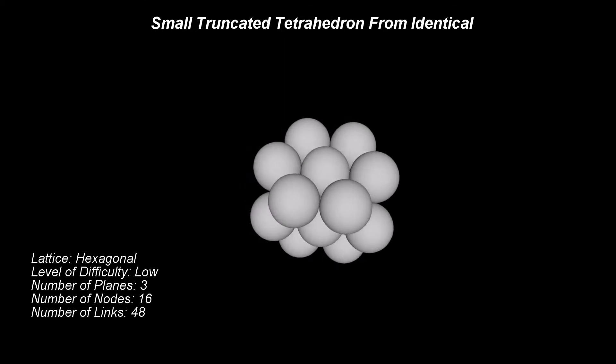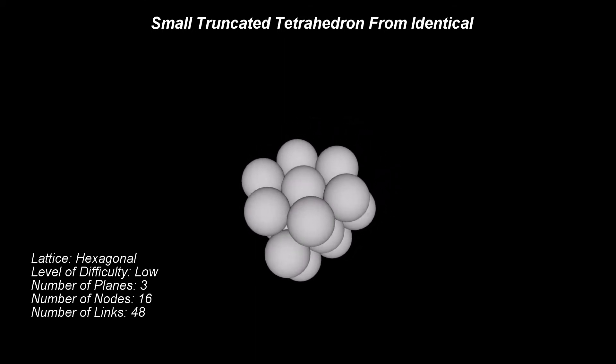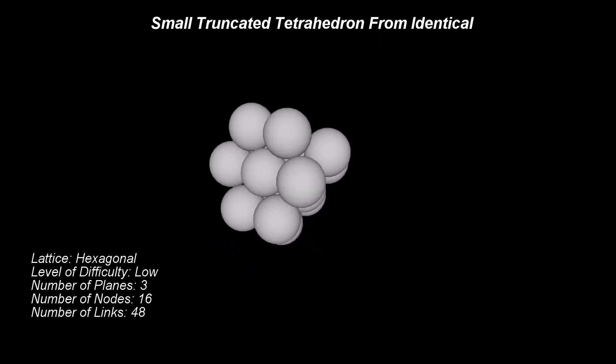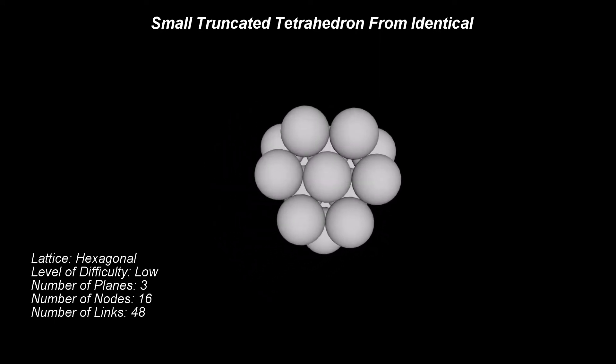This process can be applied to tetrahedrons formed from fewer numbers of spheres. The truncated tetrahedron pattern can still be seen clearly in this simple structure.